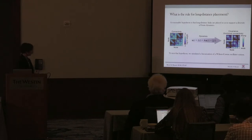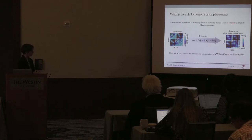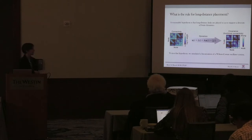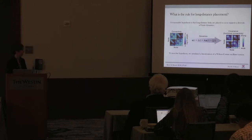One question is: what is that shared reason that helps explain where the long-distance connections are placed across these systems? We posited a relatively reasonable hypothesis: long-distance connections perhaps are placed so as to support a diversity of brain dynamics. We start with that structural connectome and simulate dynamics upon it. In this case, we used a very simple linearization of a Wilson-Cowan oscillator model. From that simulated dynamics, you can extract a covariance matrix, or what some in the field call a functional connectivity matrix.